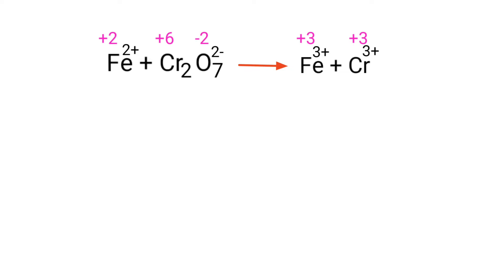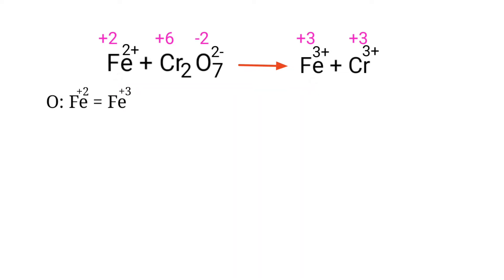In the Ion Electron Method, one reaction is divided into two half-reactions, which are then balanced and added together. In this equation, Iron has a charge of +2 and it is changing to +3, so Iron is being oxidized. Chromium has a charge of +6 and it is changing to +3, so Chromium is being reduced.